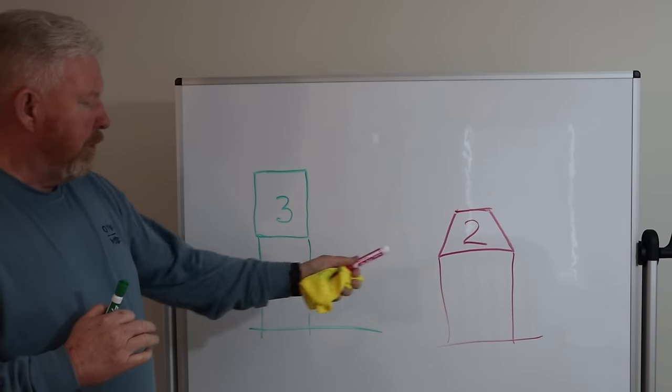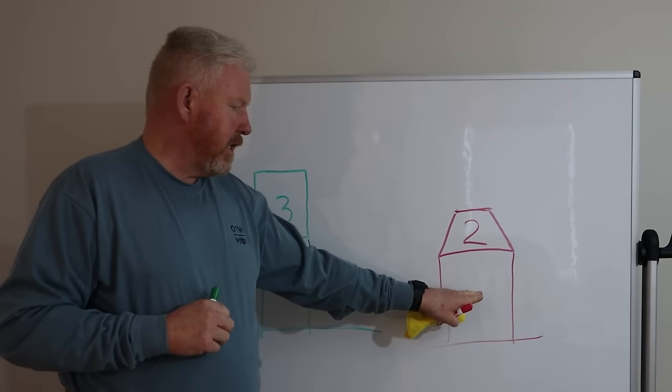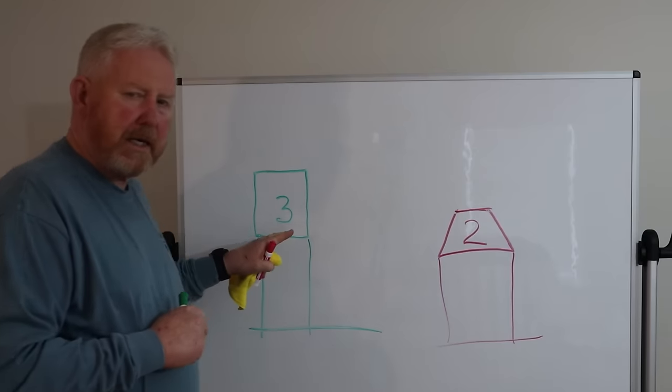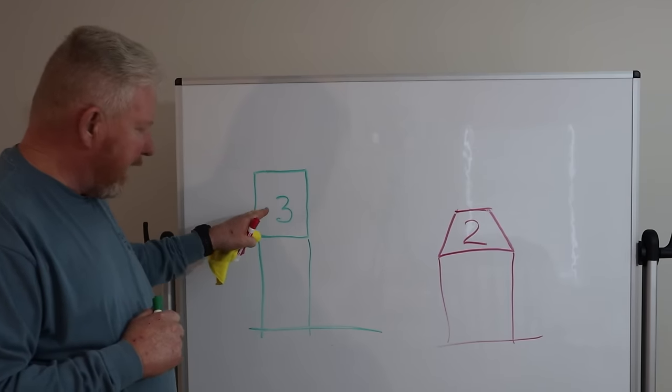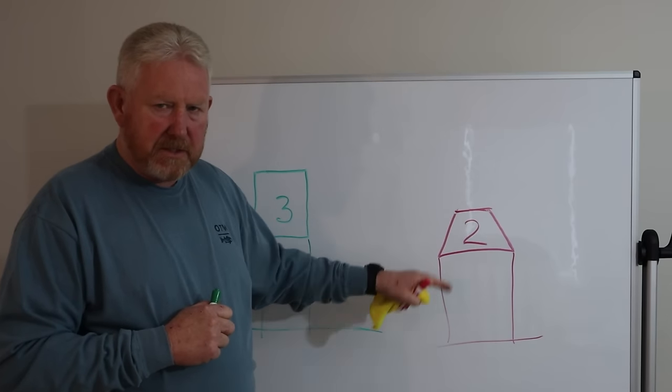Now we have a red and a green buoy. This is referred to as a nun. It has a shape that you're not going to confuse with a can. It looks like a triangle with the top of it missing.